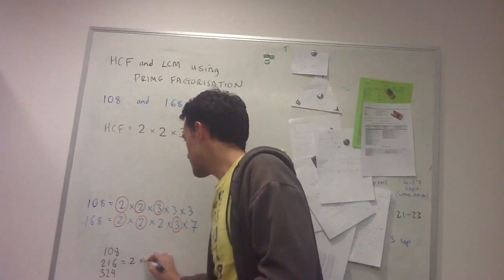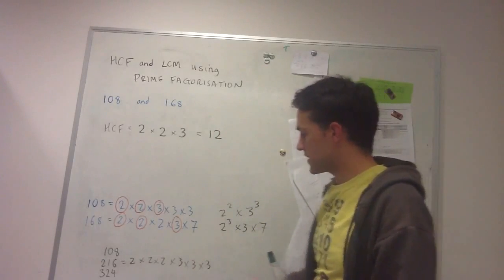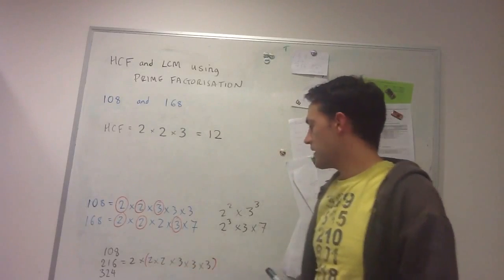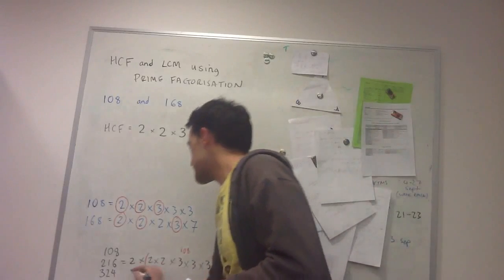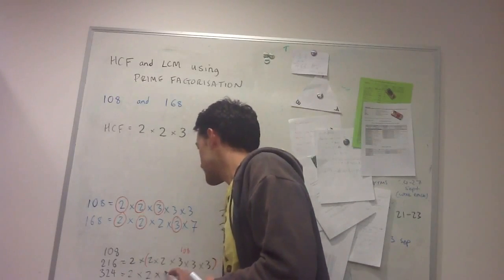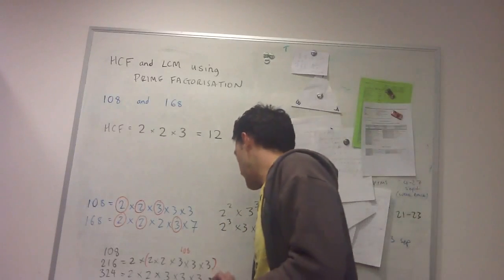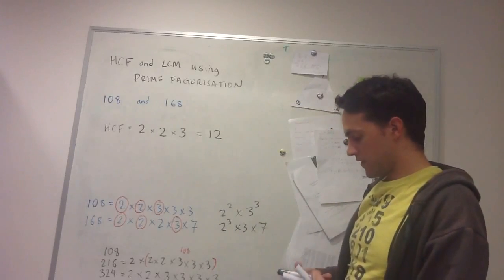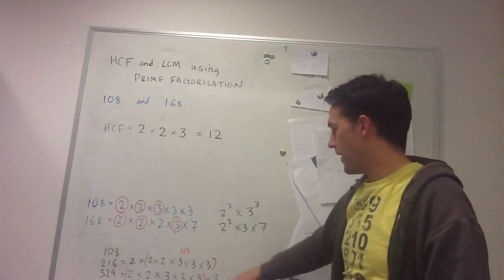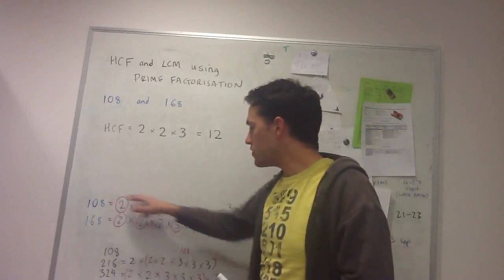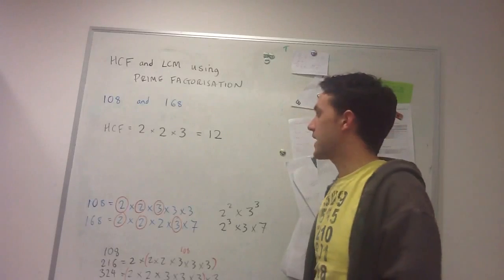So 216 is 2 times 2 times 2 times 3 times 3 times 3, so you see, it's just 2 times, and then this part here is our 108. And then 324 is 2 times 2 times 3 times 3 times 3 times 3. And so for 324, this is my 108, 2 times 2 times 3 times 3, and then it's the third multiple. So all of the multiples of 108 have to have at least two 2's and three 3's, and that's how we know that 108 will be one of their factors.